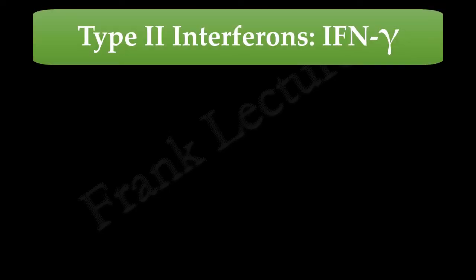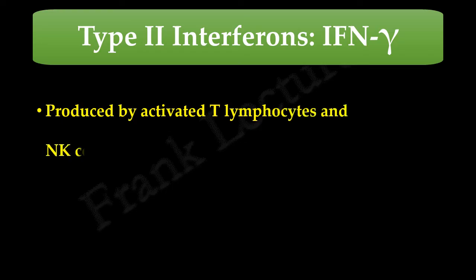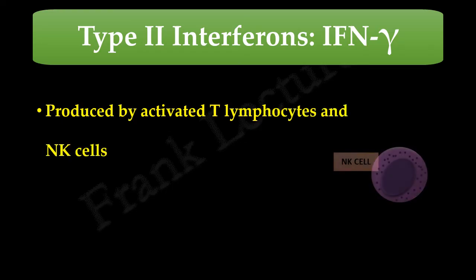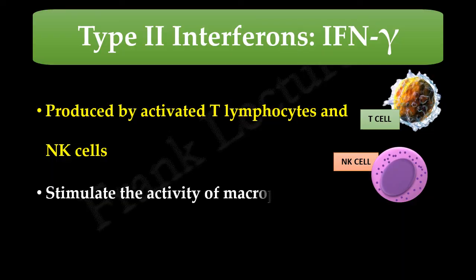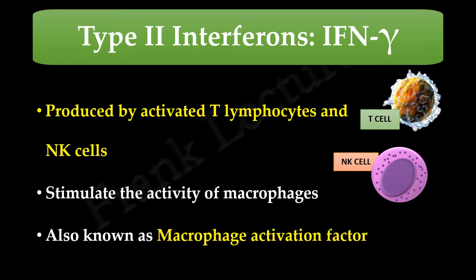Type 2 interferons comprise interferon gamma. Interferon gamma is produced by activated T lymphocytes and natural killer cells. They stimulate the activity of macrophages, and for this reason they are also known as macrophage activation factor.